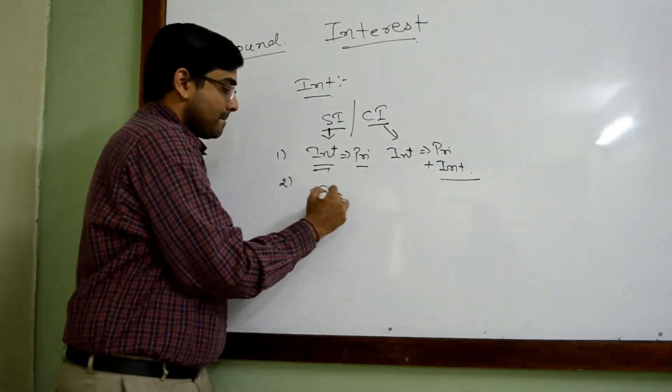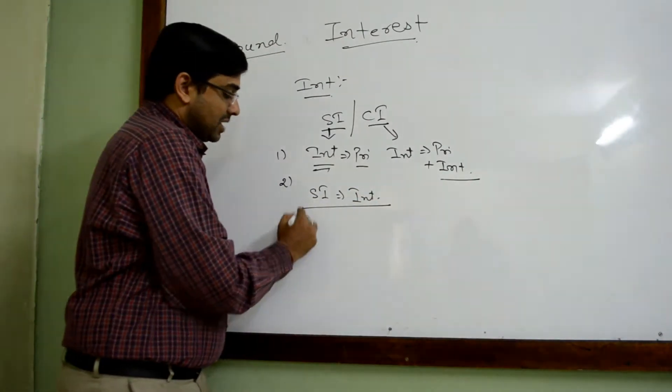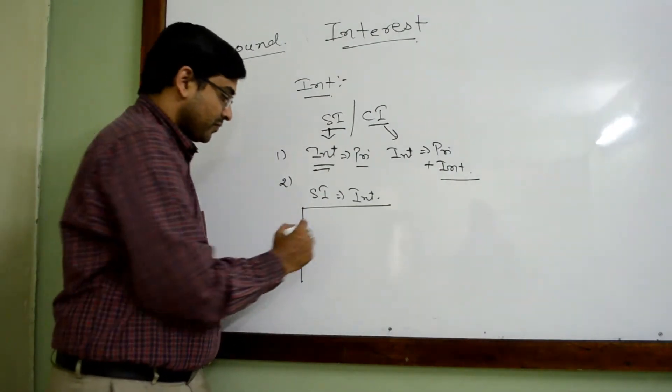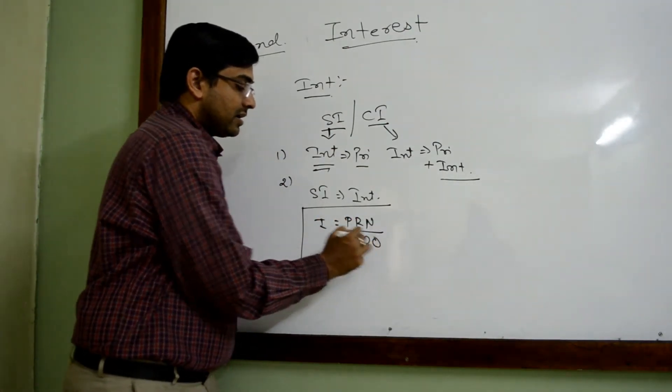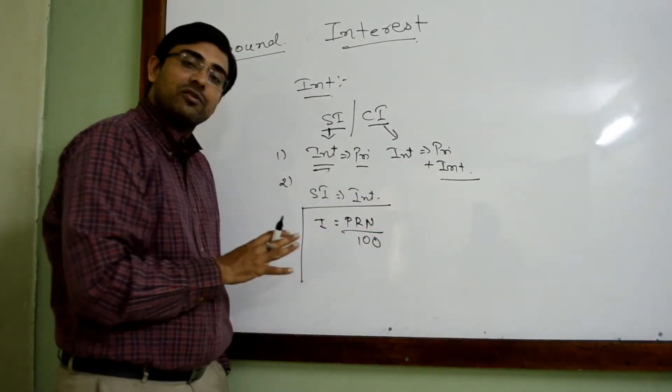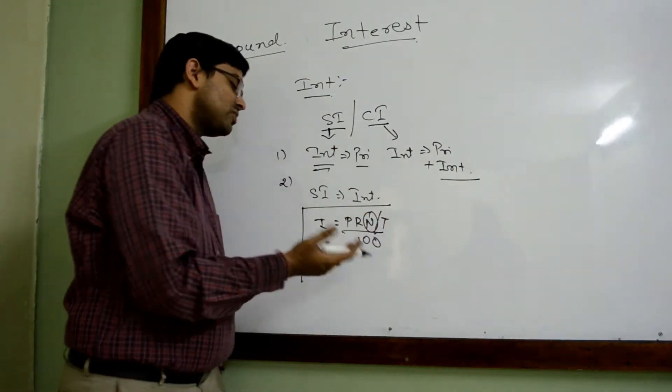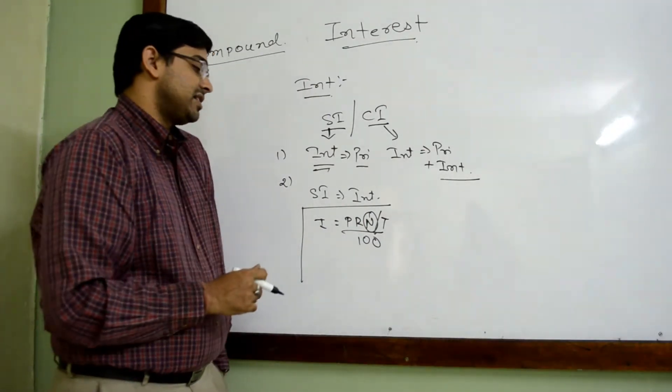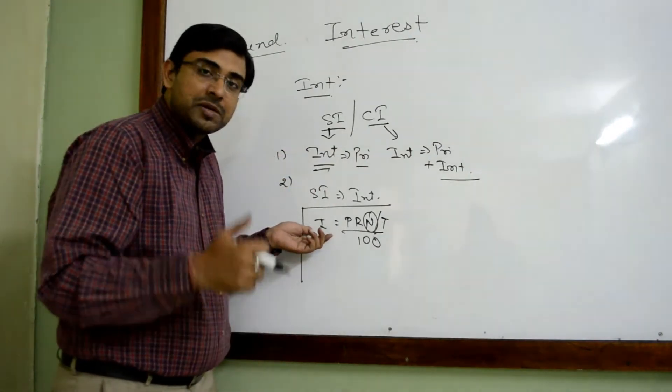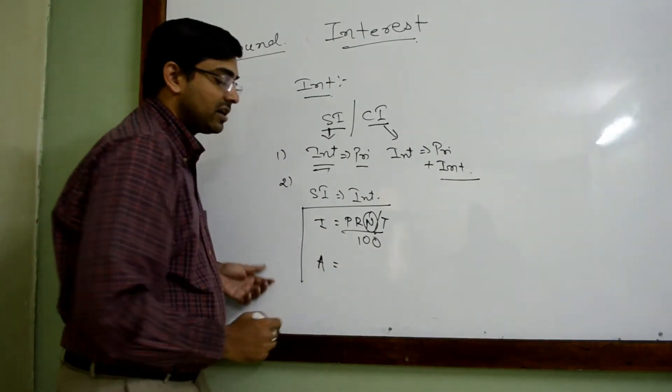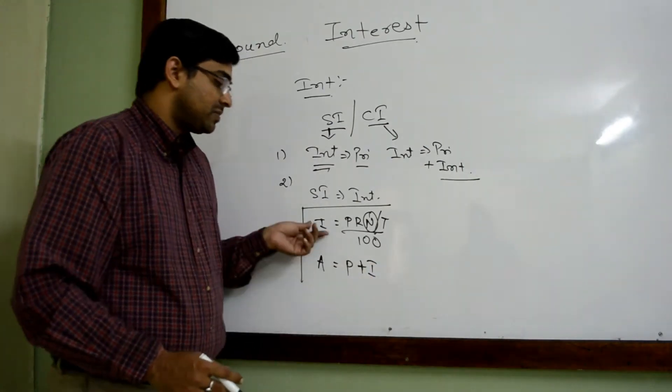It is interest dominated calculation. In simple interest we have two formulas used. One is the interest formula which is I equals PRN by 100, where P is the principal, R is the rate of interest, and N is the number of years for which we have invested. The formula for amount is A equals P plus I. Amount is principal plus interest.